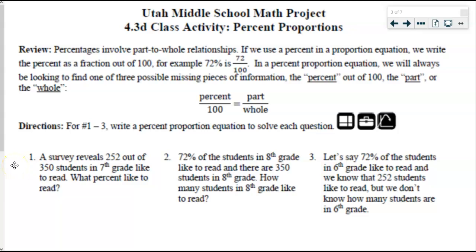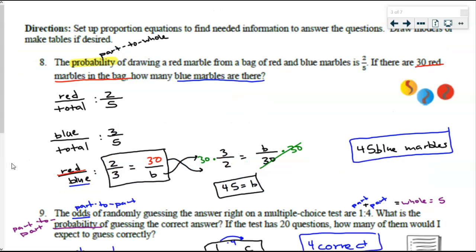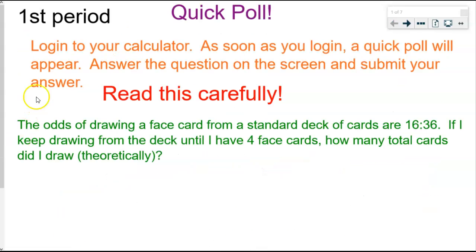Hello Math 7 students, this is Utah Middle School Math Project 4.3d called percent proportions. This is kind of a continuation of our odds and probability. We're going to be talking a little less about odds and probability and more about percent, but the concept and the process is still going to be the same. To get started, we have this quick poll to review odds and probability from our last lesson.